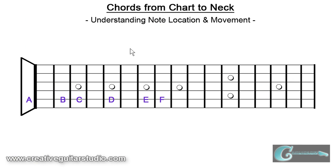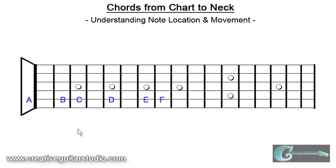We're going to begin with an understanding of how note location operates for your fretboard, as well as how movement can occur with both notes and standard chord shapes. We're going to begin on the fifth string with an open fifth string A, moving to second fret B, third fret C, fifth fret D, seventh fret E, and eighth fret F. Notice the note movement in distance — between A and B it's a whole step, between C and D it's a whole step. Pretty much all your notes on the neck have a whole step movement between them except for B and C, and E and F — referred to generally as the natural occurring semitones.